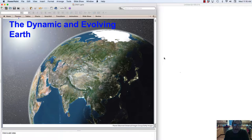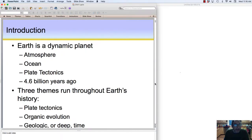Hello and welcome back to Historical Geology. Today I want to cover chapter one, which is a Dynamic and Evolving Earth. In this chapter, we're going to first think about this changing planet—dynamic means changing—and we'll look at it in terms of atmosphere, oceans, plate tectonics, and geologic time.